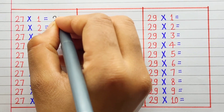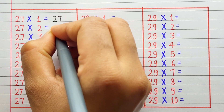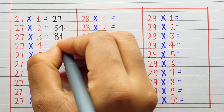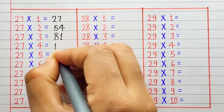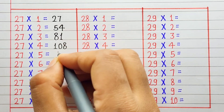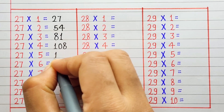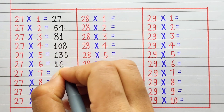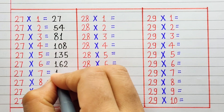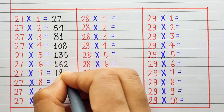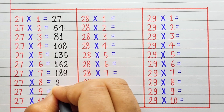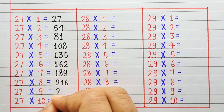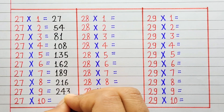27 1 ja 27. 27 2 ja 54. 27 3 ja 81. 27 4 ja 108. 27 5 ja 135. 27 6 ja 162. 27 7 ja 189. 27 8 ja 216. 27 9 ja 243.